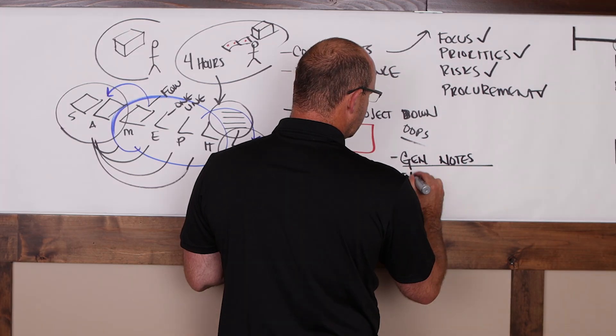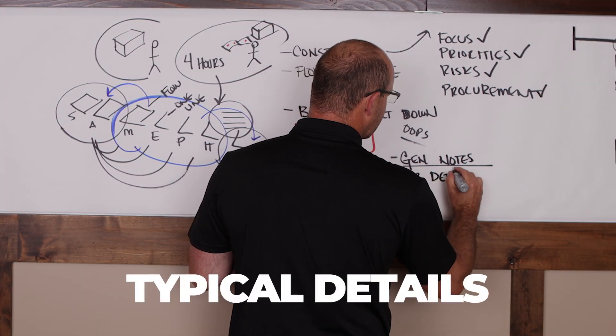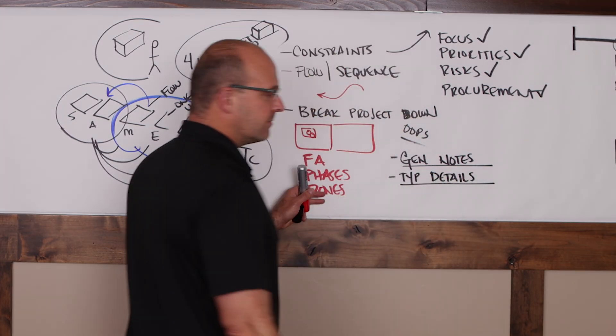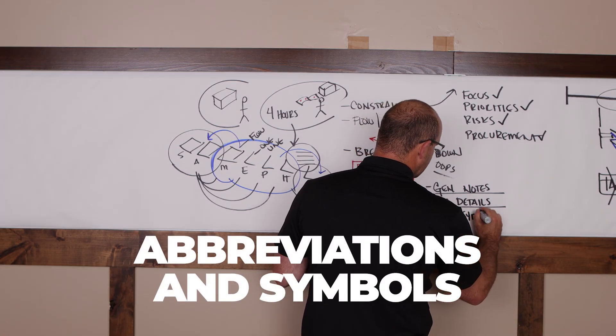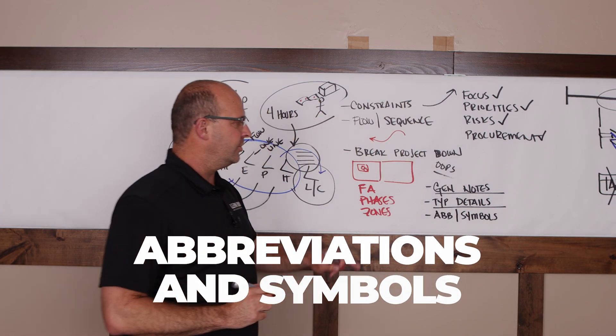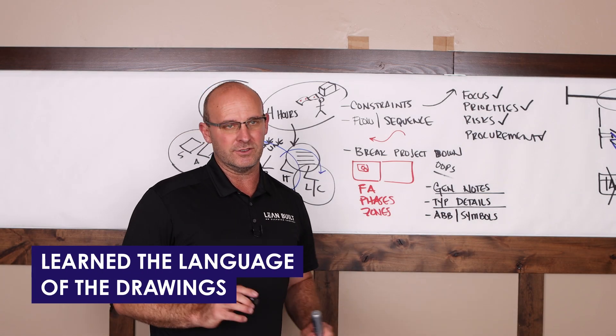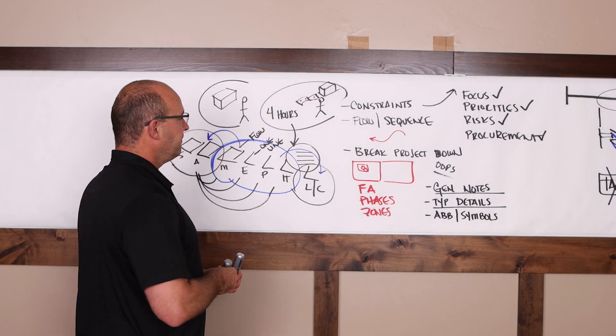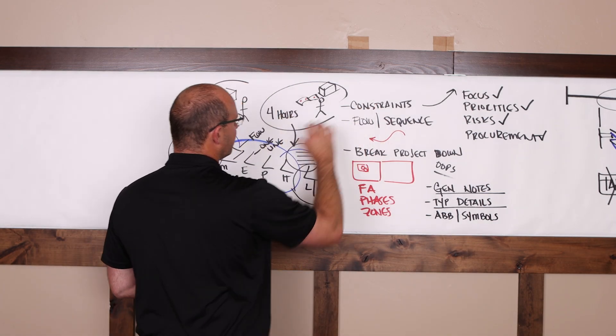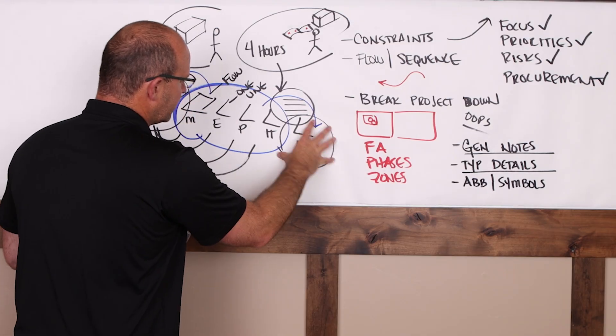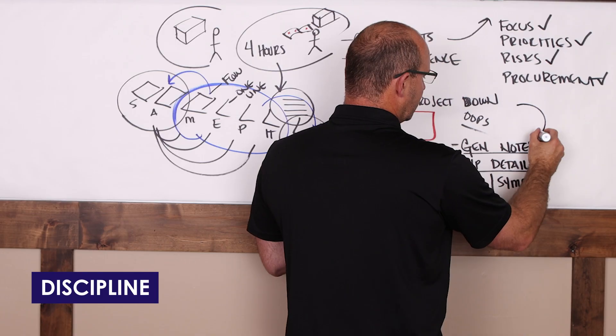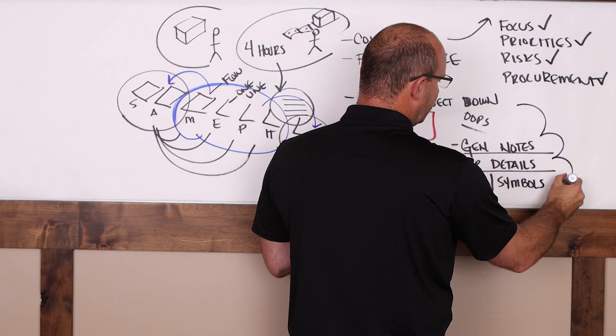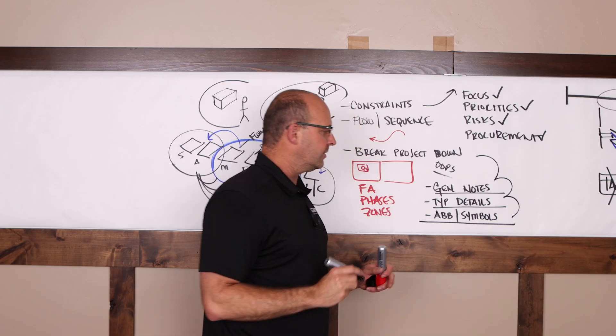Highlight anything that's pertinent. Then you're going to go to the typical details. And I want you to spend some time there. Then you're going to go to the abbreviations and symbols. And what that's going to do, you have now learned the language of the drawings. So not only do you have the right approach for when to dive in, but now you know what sets to dive into first. And when you do it, you'll have this discipline. General notes, typical details, abbreviations and symbols. You have just learned a new language.